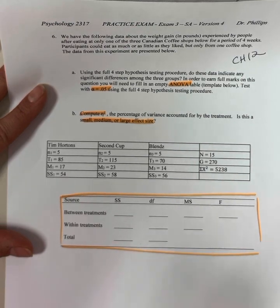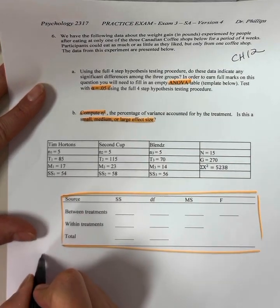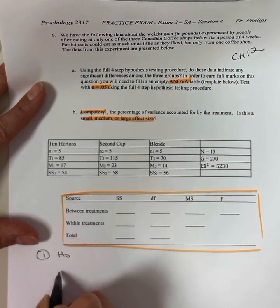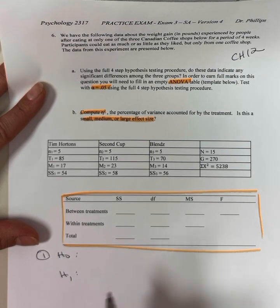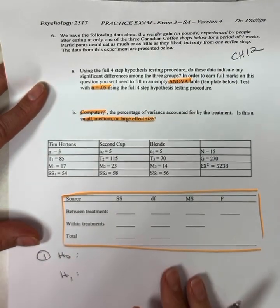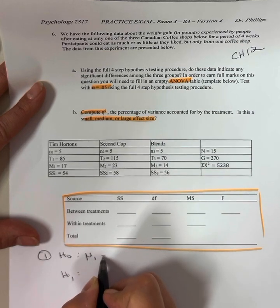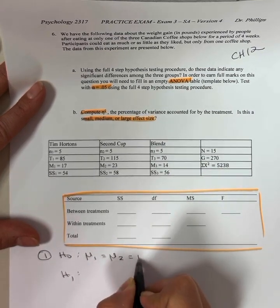Full four-step hypothesis testing procedures. Step one, hypotheses. We need our null, we need our alternate. The null needs to map onto however many groups we have. So we have three groups, so we need mu1 equals mu2 equals mu3.